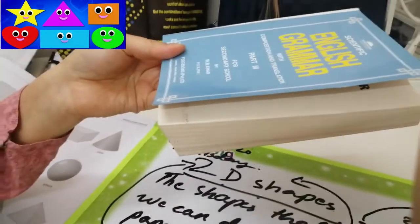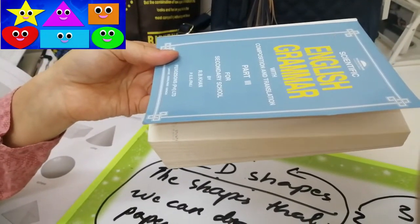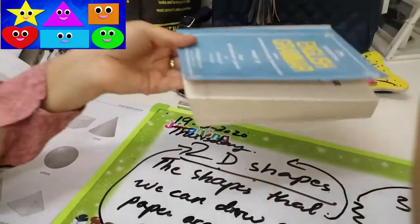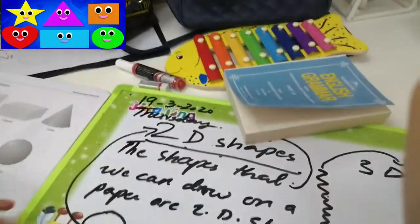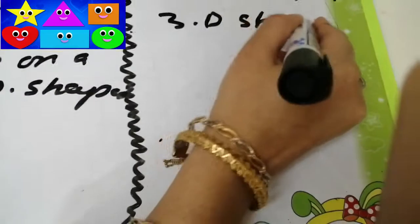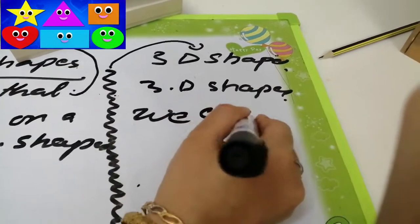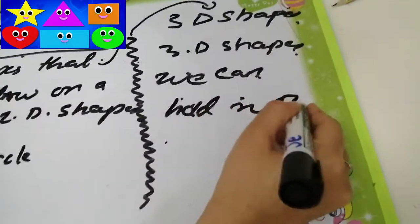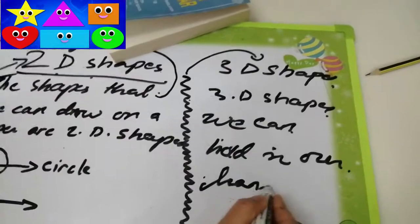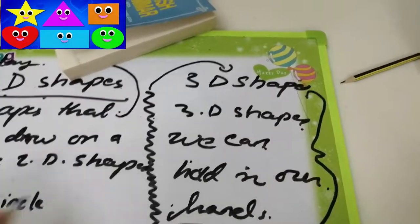Some 2D shapes and 3D shapes are similar to each other to some point. But their main difference is that 3D shapes we can hold in our hands. This is the basic point that we should know about 3D shapes.